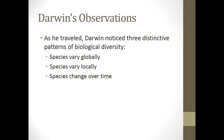As he traveled, Darwin noticed three distinctive patterns of biological diversity. First, species vary globally, from one point of the earth to another. Second, species vary locally, meaning in one small area species can be different. And third, he could see that species changed over time by looking at fossils and comparing them to living organisms.